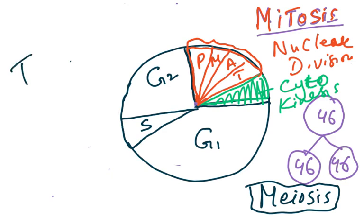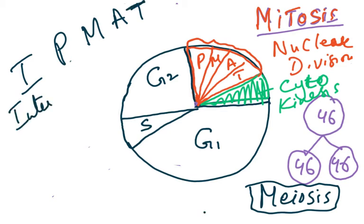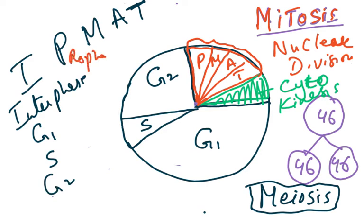A simple mnemonic to remember is 'I P-MAT': I for interphase (G1, S, and G2), P for prophase, M for metaphase, A for anaphase, and T for telophase, followed by cytokinesis.